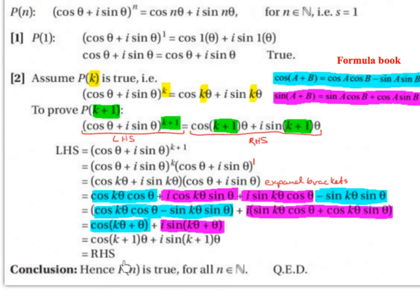Conclusion: hence, P(n) is true for all n values elements of the natural number set. QED — which is Latin to indicate that we've shown what we were asked to show.